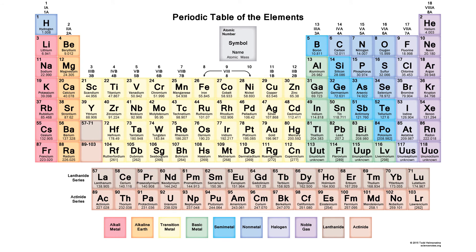Looking at the periodic table, it's not set up in isotopic format. The atomic numbers increase left to right — carbon is 6, nitrogen 7, and so on. What you see for mass numbers on the periodic table are average mass numbers listed below the element. What you see on any periodic table is not the mass of a specific isotope, but rather the average.